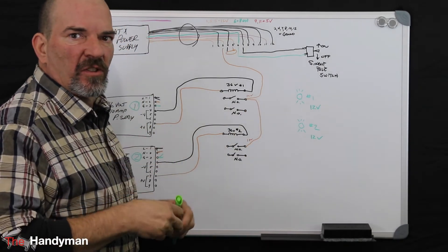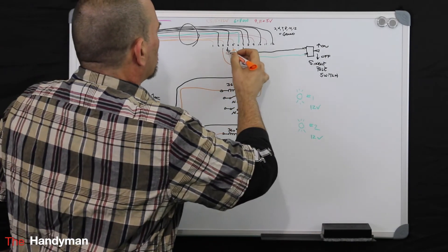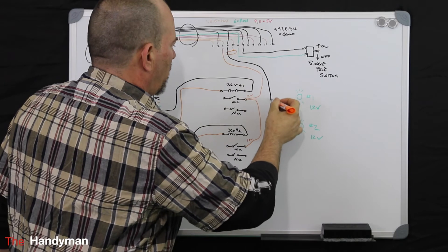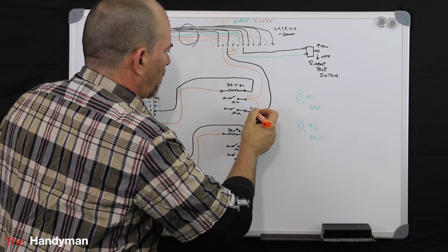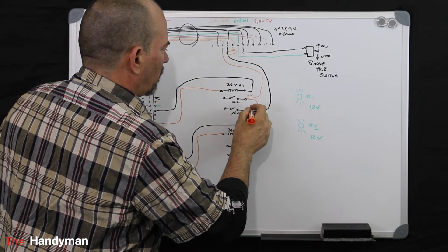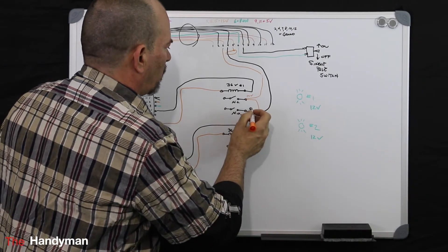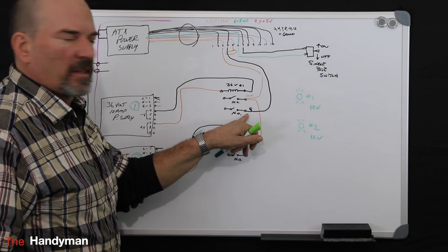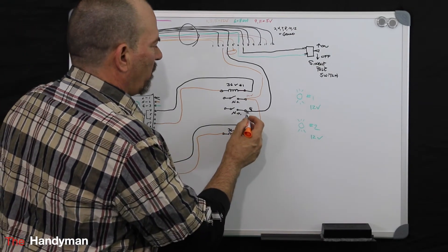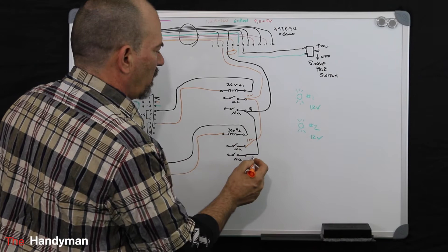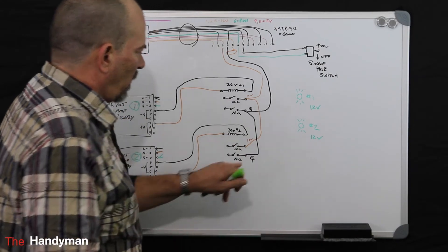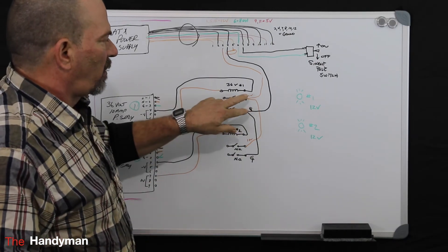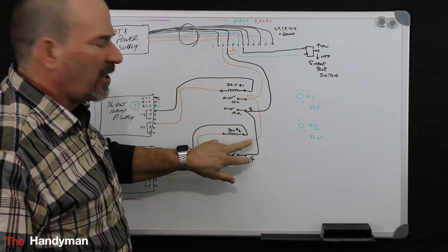Then you need to do the same for your 12 volt ground. We'll take terminal number 4. We'll bring that down and you put that to one side of another set of normally open contacts. And you can do the same. Jumper that down into another set on that one. So now that you've supplied your 12 volts to a pair of normally open contacts on each relay.